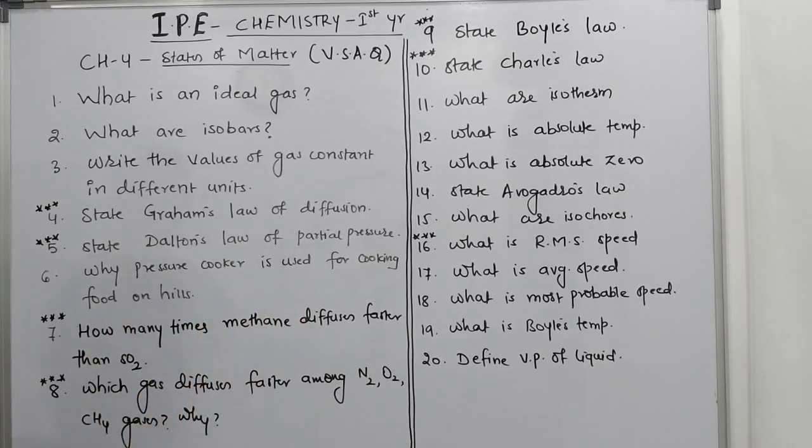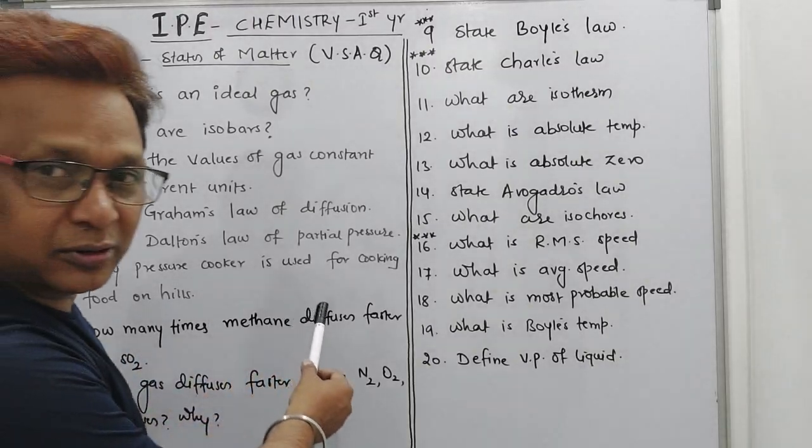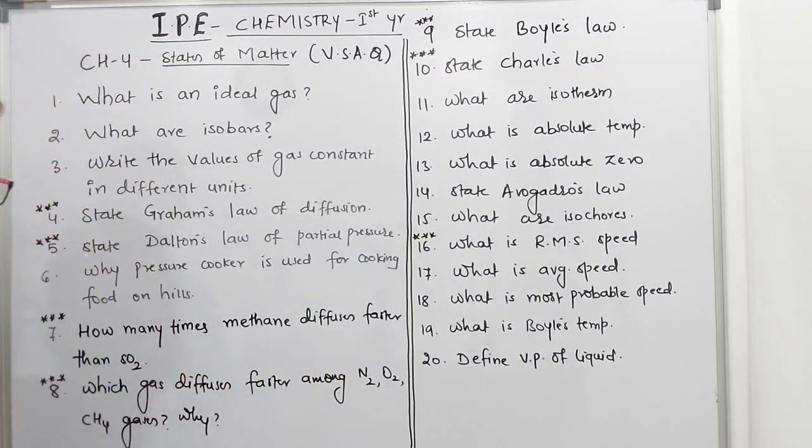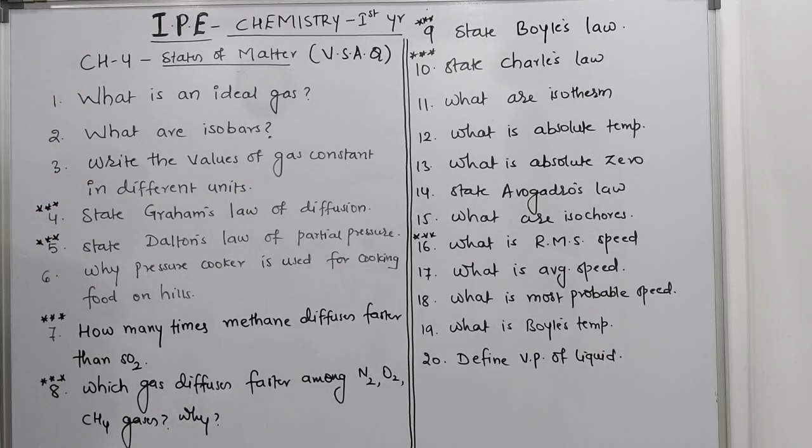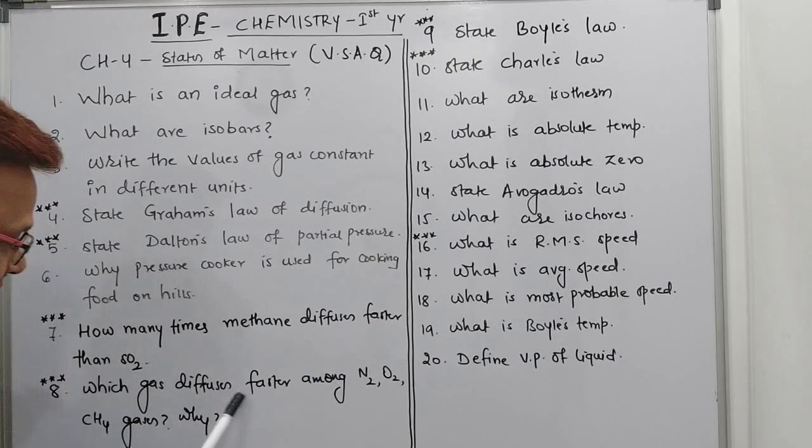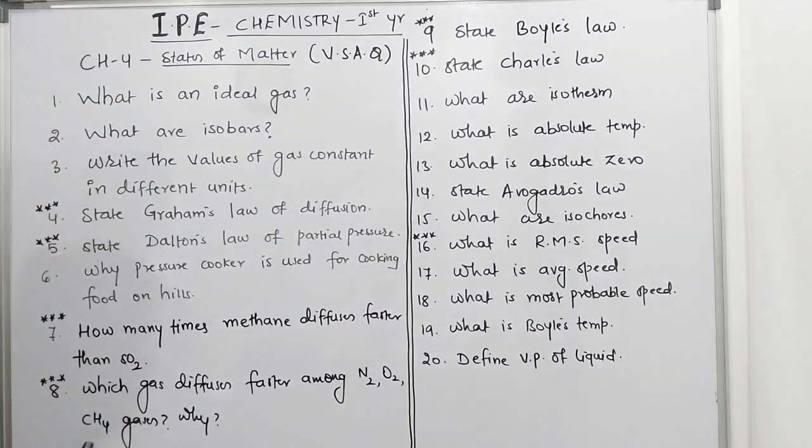State the Dalton's law of partial pressure. Why the pressure cooker will be used for cooking the food on the hills? How many times the methane gas diffuses faster than SO2? Which gas diffuses faster among N2, O2 and CH4 gases and why?